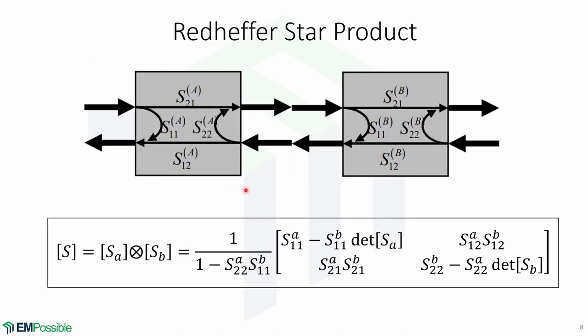We can cascade these scattering matrices in series and this will be the schematic. Now in order to combine them we need to use what is called a red heifer star product which is given by this symbol and is equal to this expression.